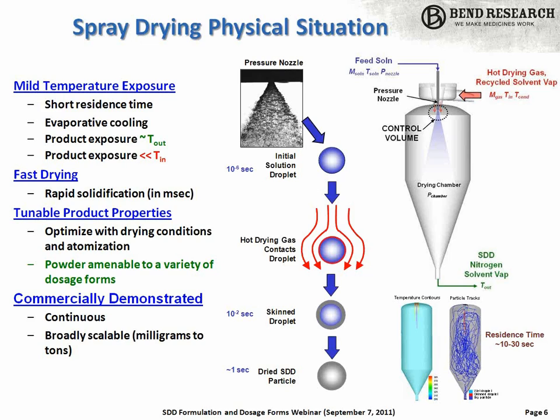The drying process is very fast, on the order of milliseconds. What that allows you to do is kinetically trap an amorphous dispersion very quickly, so you can operate in metastable regimes that might be difficult to prepare by other slower means. The properties of the particles are quite tunable by process and equipment selection — you can tune the particle size, density, etc. — to be amenable to different kinds of processing and presentations. And the process is quite scalable, going from milligram scale up to metric tons, with the science of scale being quite well understood.